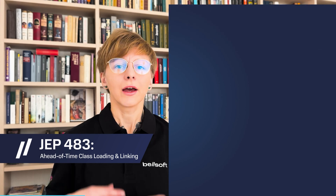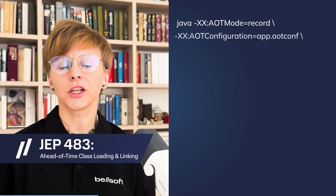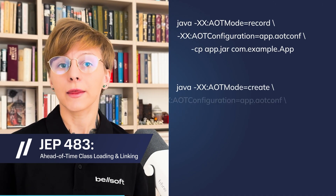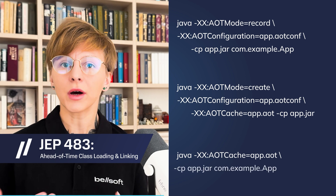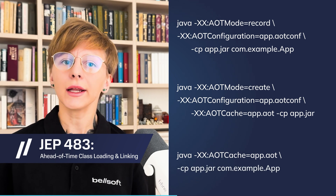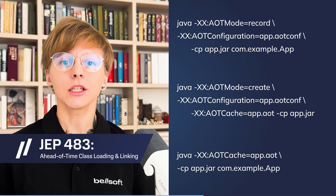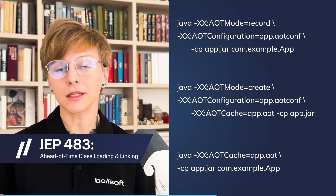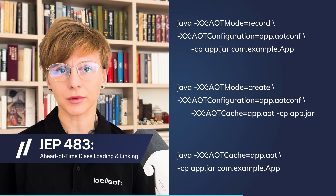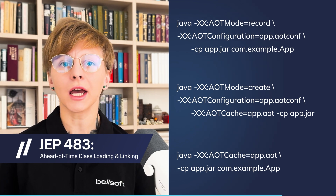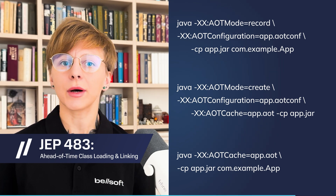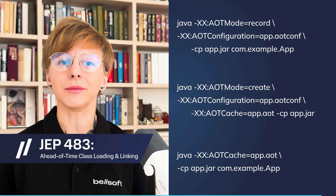JEP 483 introduces an AOT cache that stores class data after reading, parsing, loading, and linking classes. This way, the JVM will have less work to do during startup. Preliminary tests show that the AOT cache yields about 40% better startup time.